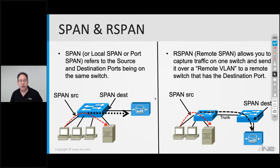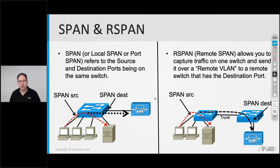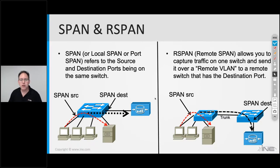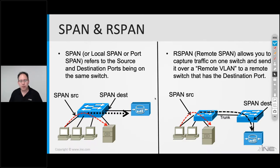The two forms of SPAN are local SPAN and Remote SPAN (RSPAN). Local SPAN means the source and destination are on the exact same physical chassis — great if your Wireshark laptop is physically connected to the switch where the suspect traffic is. Remote SPAN is for when the switch you want to monitor is in a different building. In that case, the SPAN source on one switch copies traffic and places it inside a special RSPAN VLAN, tagged with 802.1q, and sends it across VLAN trunks to the switch where your monitoring device is connected.